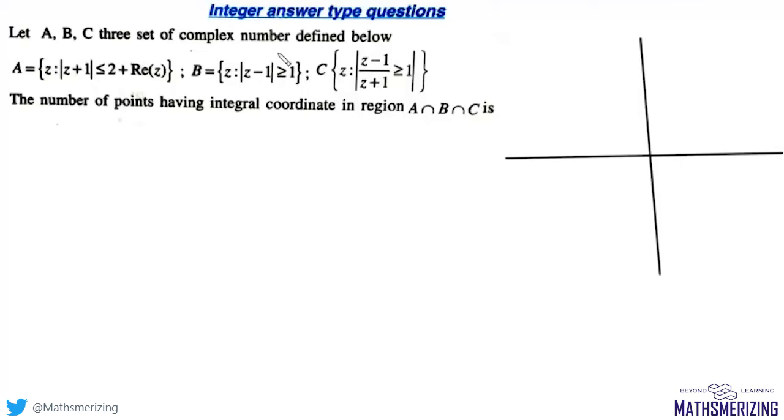Let A, B, C be three sets of complex numbers defined below. The first one is mod of z plus 1, which is less than or equal to 2 plus the real part of z.